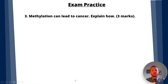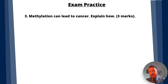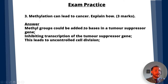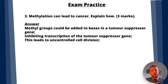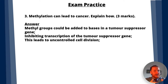Question three: methylation can lead to cancer — explain how. Methyl groups could be added to bases in a tumour suppressor gene — that's one mark. This will inhibit transcription of the tumour suppressor gene — that's a second mark. And for a third mark, this leads to uncontrolled cell division. Note: you might think about proto-oncogenes, but the role of proto-oncogenes is to stimulate cell division, so preventing them from being expressed would slow down cell division — you wouldn't get the mark for that.